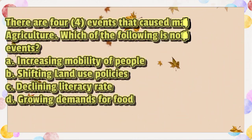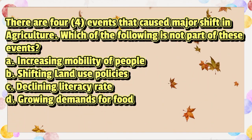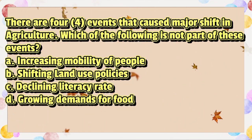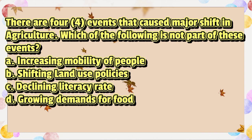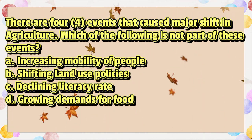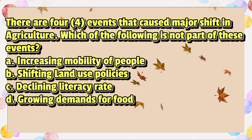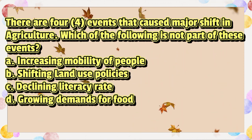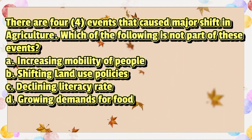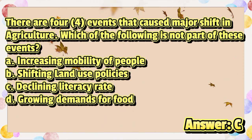There are four events that caused a major shift in agriculture. Which of the following is not part of these events? A. Increasing mobility of people. B. Shifting land use policies. C. Declining literacy rate. D. Growing demands for food. The answer is letter C.